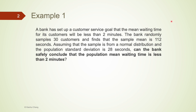I will use this example throughout the video to discuss the steps involved in hypothesis testing. A bank has set up a customer service goal that the average waiting time for its customers will be less than 2 minutes. The bank randomly samples 30 customers and finds the sample average is 112 seconds. Assuming the sample is from a normal distribution and the population standard deviation is 28 seconds, can the bank safely conclude the population average waiting time is less than 2 minutes? As the last sentence indicates, this is a yes or no question. We want to test the bank's claim whether their average waiting time is less than 2 minutes or not.